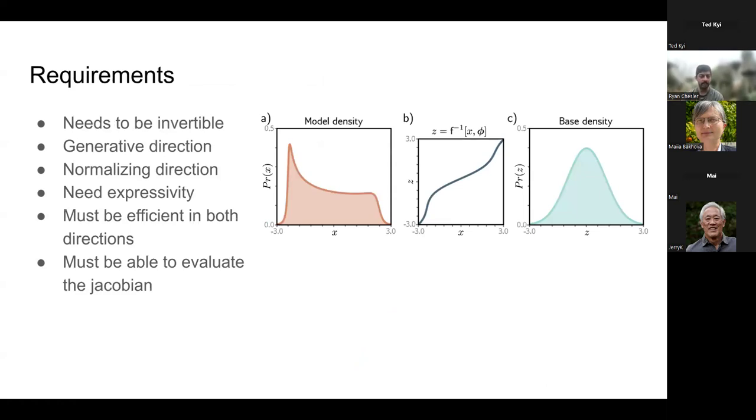In these systems we have a few different requirements in order to have that property where we can go in both directions. All of the operations need to be invertible, and we're doing things in two different directions: the generative direction and the normalizing direction. We need this to be expressive. We could do some trivial things that would be invertible but it wouldn't be very interesting because it couldn't move the distribution very much. We need it to be efficient in both directions. Another requirement is they have to be able to evaluate the Jacobian efficiently as well.